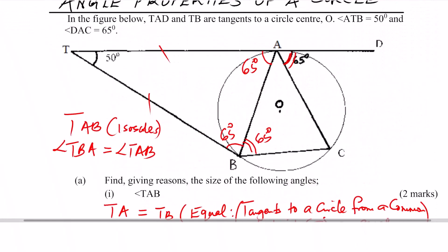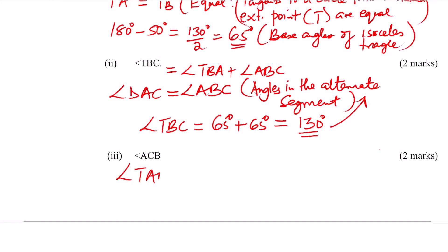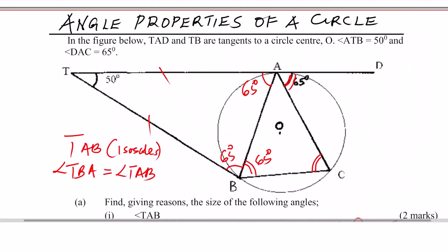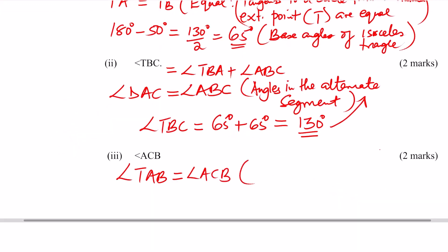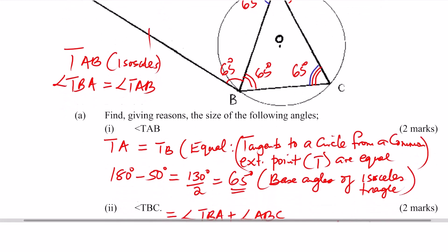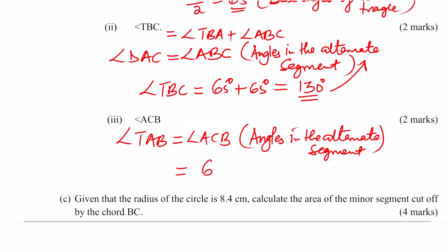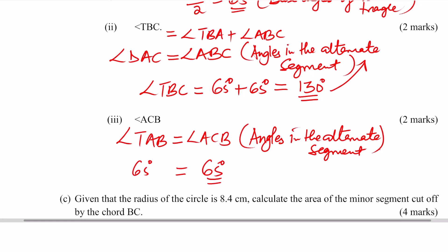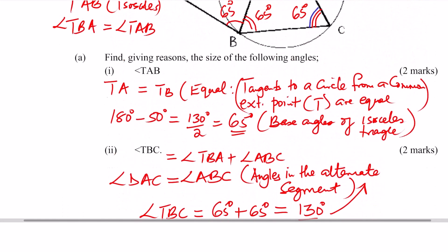For angle ACB, the same alternate segment property applies. Angle TAB is equivalent to angle ACB — these are also angles in the alternate segment. Since angle TAB is 65°, angle ACB is also 65°. Therefore angle ACB equals 65°.